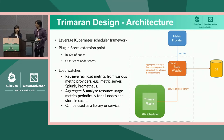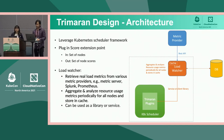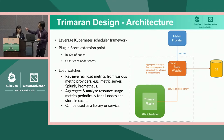For a given scoring plugin, you get as input a set of nodes, and what you output are different node scores for those nodes, depending on the algorithm you define. In the diagram, you can see that the Trimoran plugins are part of the Kubernetes scheduler, so they run in the same binary.